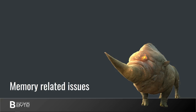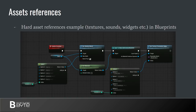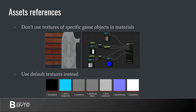First topic will be asset references. Some of you may know about the difference between hard references and soft references. Hard reference loads the asset in memory whenever it's present in script or code. Soft reference, on the other hand, just holds the path to the asset and only loads it when it should be played or demonstrated to the player. Tend to use soft references whenever possible. Now, one non-obvious consequence: when you set an actual texture in a material, this texture will be loaded and stay in memory even if the base material isn't applied to any object in your scene.